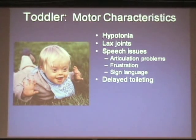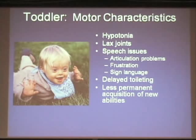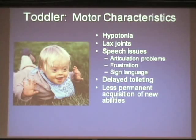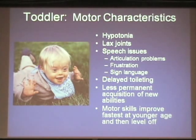Toileting may be delayed partly because of constipation, and because muscle tone is important for those body processes — when tone is low, things don't move as easily. Where an average child might be toilet trained by age four, children with Down syndrome take longer and may not be trained by kindergarten or even first grade. Something somewhat specific to Down syndrome is that when they acquire a new skill, it doesn't stick as well — they may need to relearn it several times before it truly becomes established.